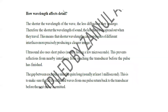Shorter wavelengths cause less diffraction, so the wave spreads out less as it travels, allowing finer tissue detail to be mapped. Ultrasound uses short pulses in terms of time duration. Using a longer pulse prevents reflections from nearby interfaces from being detected before the pulse has finished. The gap between each pulse must be around one millisecond so that the sent and received pulses do not overlap. Shorter wavelength gives a more detailed image.